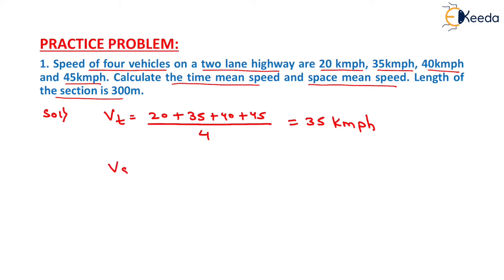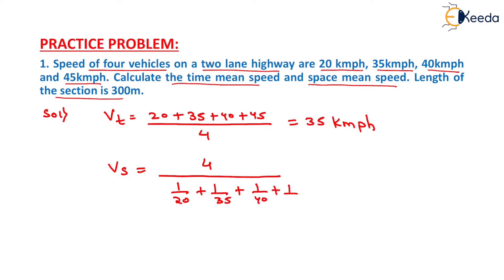Now, to determine the value of space mean speed, it will be equal to 4 divided by (1/20 plus 1/35 plus 1/40 plus 1/45). Solving the denominator: 1/20 plus 1/35 plus 1/40 plus 1/45, the result comes out as 0.125. Dividing the numerator by the denominator gives 31.798 km per hour, which will be the space mean speed.